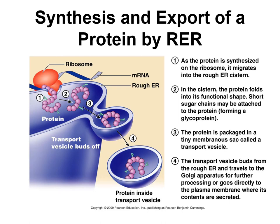This figure illustrates that process. You have ribosomes attached to the cisternae of the rough endoplasmic reticulum, and here a protein is being formed — the purple round structures represent amino acids, since a protein is a polymer of amino acids. The protein is produced at the ribosome, detaches, moves within the cisternae of the rough ER, is packaged into a vesicle, and then that vesicle is transported inside the cell, typically to the Golgi apparatus or Golgi complex for further processing.